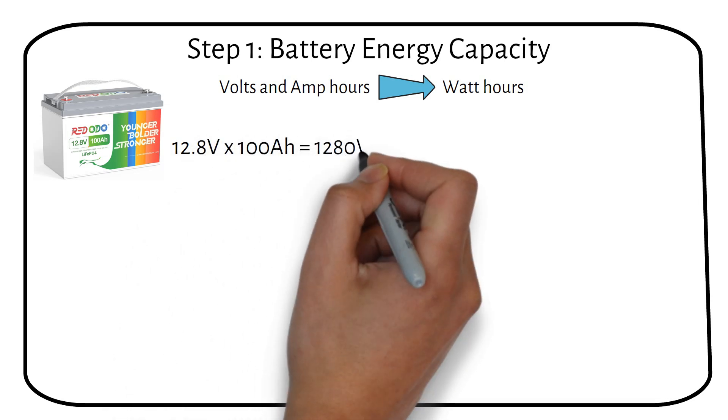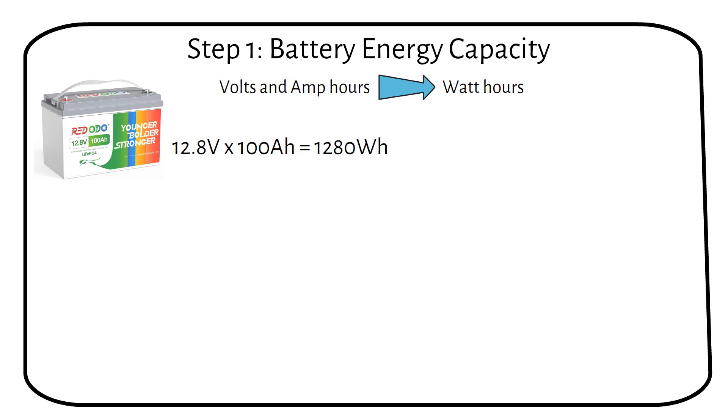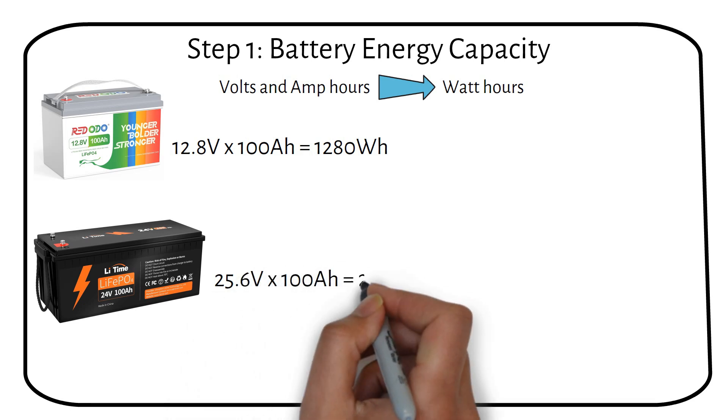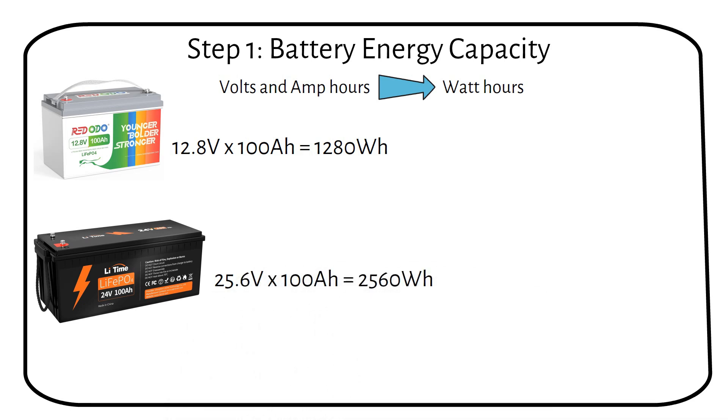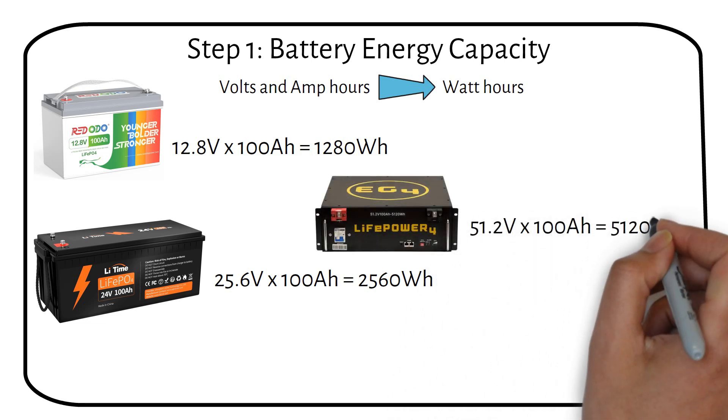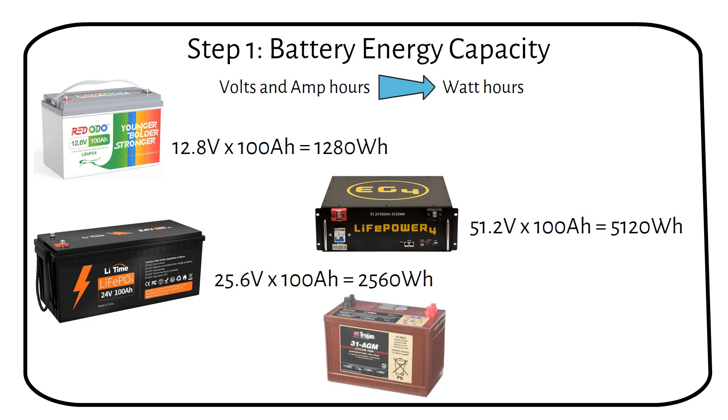Let's calculate the energy capacity for a few other batteries. A 24V 100Ah lithium battery holds 2560 watt-hours. A 48V 100Ah server rack battery holds 5120 watt-hours. A 12V 100Ah lead-acid battery holds 600 watt-hours because you should only use 50% of a lead-acid battery.